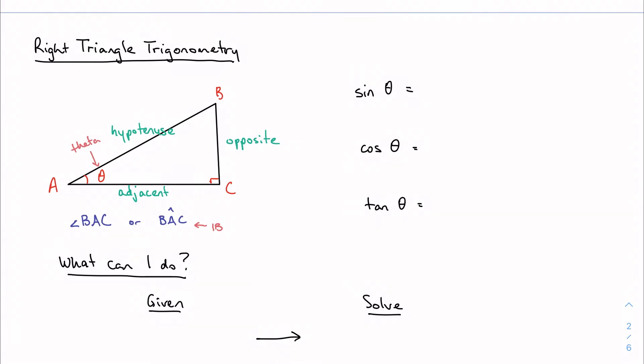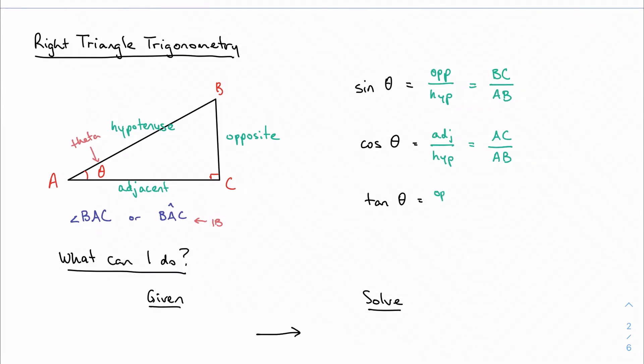And based on those facts we can define our three trig functions, our trigonometric ratios. We have sine, cosine, and tangent. If you remember from geometry, sine is just the opposite over the hypotenuse, so that's BC over AB. Cosine is adjacent over hypotenuse, so that would be AC over AB. And tangent is opposite over adjacent, so BC over AC. And you might remember the mnemonic device SOH CAH TOA. Sine is opposite over hypotenuse, cosine is adjacent over hypotenuse, tangent is opposite over adjacent.